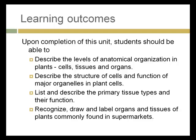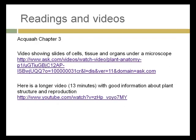We're going to look at the structure of cells and the function of major organelles, and list and describe the primary tissue types and their function. Your assignment will be to recognize, draw, and label organs and tissues of plants commonly found in your local supermarket. Readings this week are Chapter 3, which has a lot of anatomical terms. There will be an optional exercise to build vocabulary, plus a couple of videos worth watching — microscopic views of cells, tissues, and organs, and information about plant structure and how it affects reproduction.